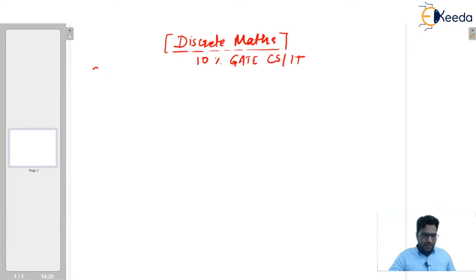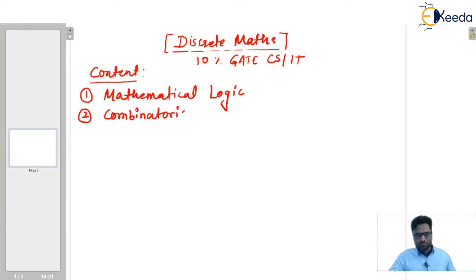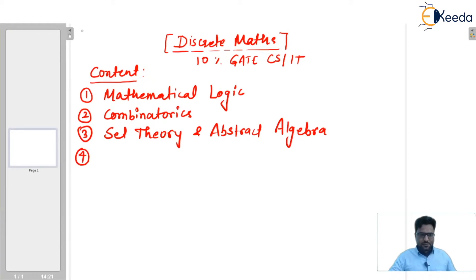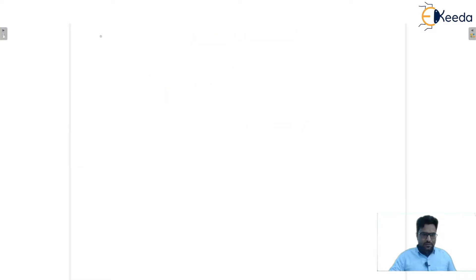The content of discrete maths includes 4 chapters. First one is mathematical logic. Second one is combinatorics. Third one is set theory and abstract algebra. And last one is graph theory. Today I am going to start mathematical logic, in which we will start with propositions and logical connectives.